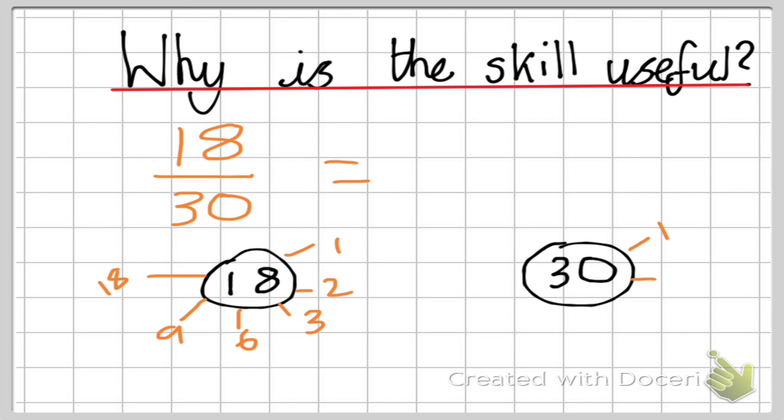Now I'm going to do it for 30. 30 is in the 1 times table, the 2, the 3, the 6, the 5, the 10, the 15, and the 30.